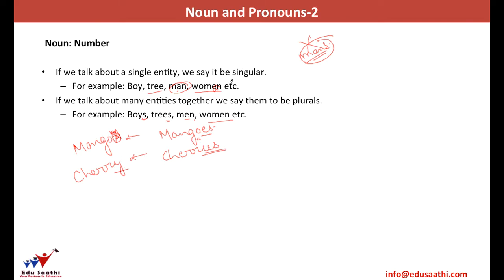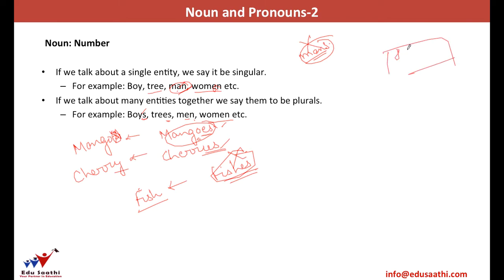Sometimes we cannot change the spelling by adding S, ES, IES, or changing a vowel. For example, in the case of fish — if I write 'fishes,' that refers to the variety of fish. In an aquarium with eight different types, I'll say 'there are fishes.' But if there are 30 of the same type of fish, I say 'it is a shoal of fish.' Likewise, it's a herd of sheep, or a school of sharks.